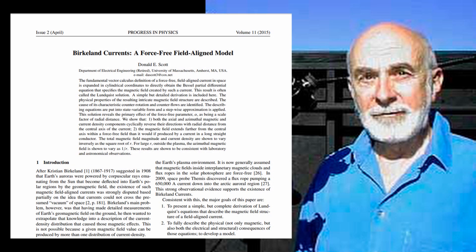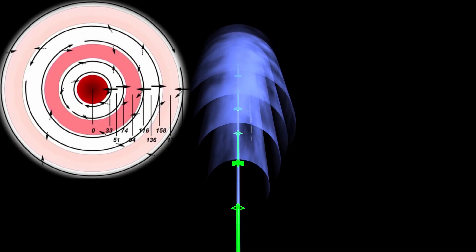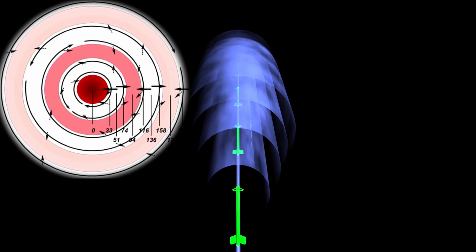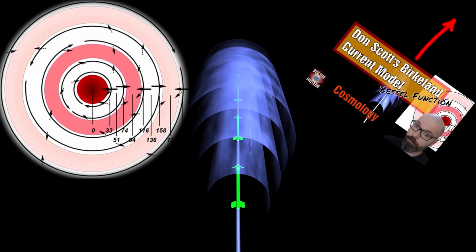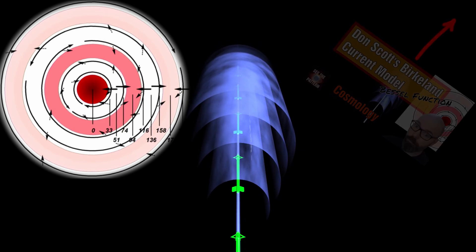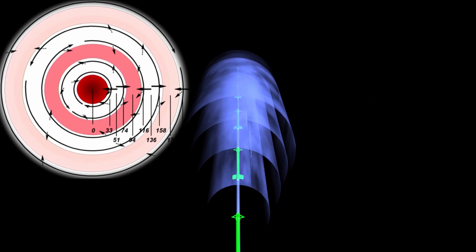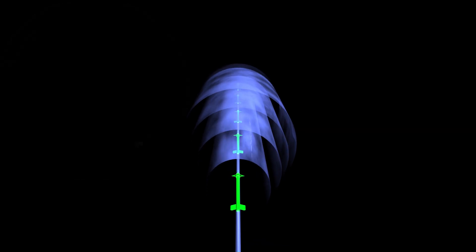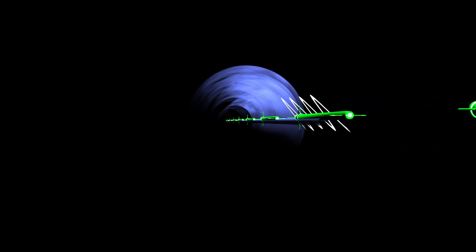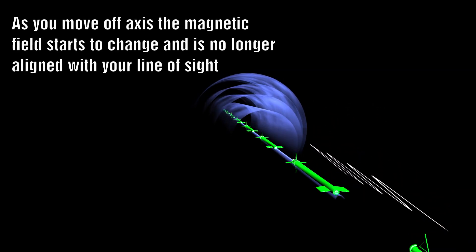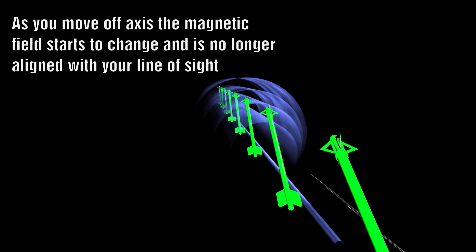We will now examine Don Scott's model and understand how this could cause the same type of polarisation to occur. It is important to realise that in Don's model, the magnetic field will slowly change as you move further and further from the centre. This means that the magnetic field will reverse several times depending on how many layers there are. So if we look directly down a Birkeland current, we would see a very strong Faraday rotation along the central axis, but nowhere else. As soon as we move slightly off axis, we would see no Faraday rotation at all.